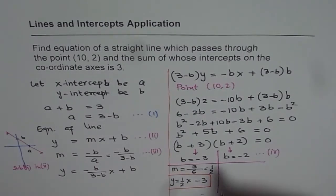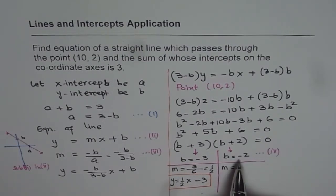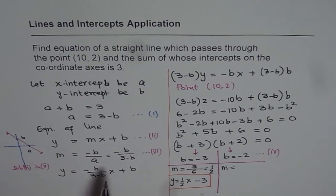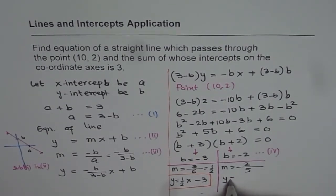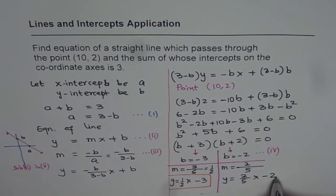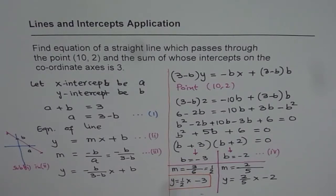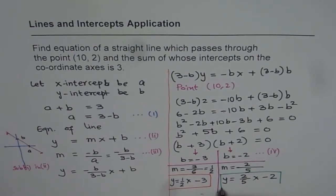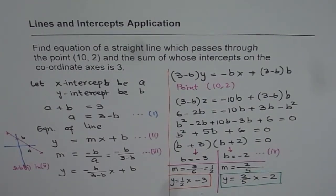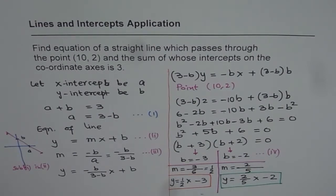And the other solution: we will put B as -2 in the given equation. Minus of minus 2 is plus 2. We get 2 here. Minus and minus will make it plus. So 3 plus 2 is 5. We get slope of 2/5. Since slope is 2/5, we can write equation of line as y = (2/5)x - 2. We get our second equation.